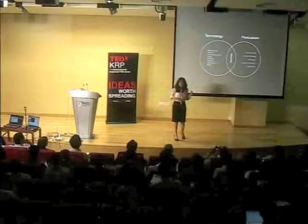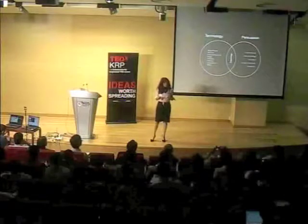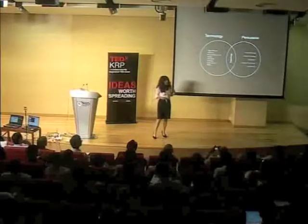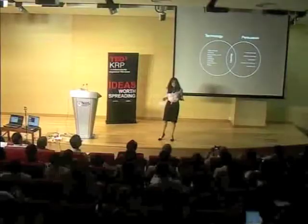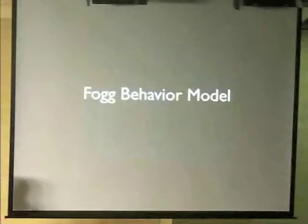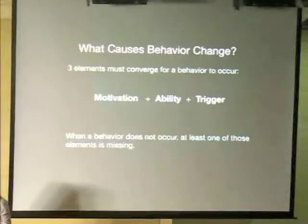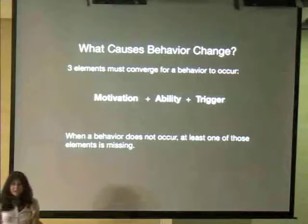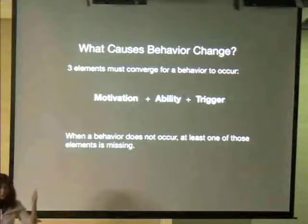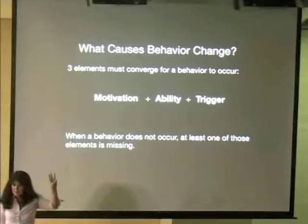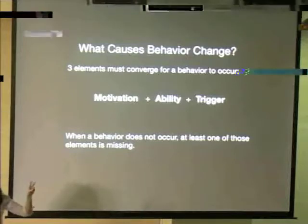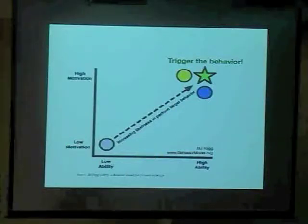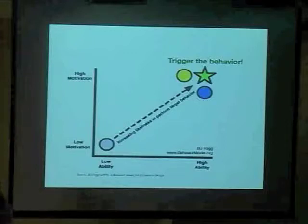In the Persuasive Technology Lab, we study how technology changes what people think and do. I'm going to talk to you about how you can implement persuasive technology — not only for your startup, but for your social cause and to change the world. The Fogg Behavior Model is very simple. If you want to create a behavior change in anyone, you need three things: motivation, ability, and a trigger. People could be highly motivated, but if it's not easy for them to do, they won't. When designing an intervention, consider: does the person have the time, the skill, the money? Does it require them to think too much? Any of those things will act as friction — as a barrier for people to act.